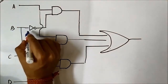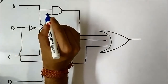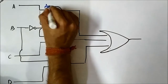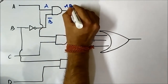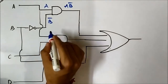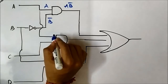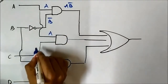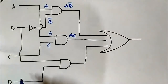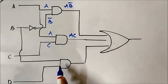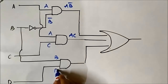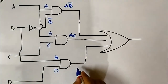B is given to the NOT gate or inverter, so the output will be B complement. The first AND gate in the second layer has inputs A and B complement, so the output is A·B complement. The second AND gate has inputs A and C, so the output is A·C. The third AND gate has inputs B and D, so the output is B·D.